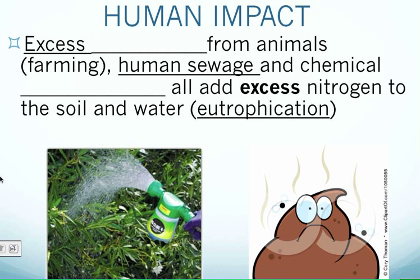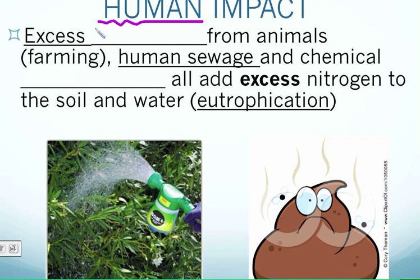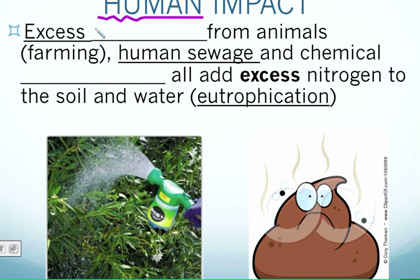Welcome to part two of the nitrogen cycle. Now that we know how the nitrogen cycle works and how nitrogen is transferred from one place to the next, let's figure out how we as humans have an impact. We need to be careful that we aren't causing too much nitrogen to concentrate in one certain spot, because that can cause problems impacting the environment on Earth.